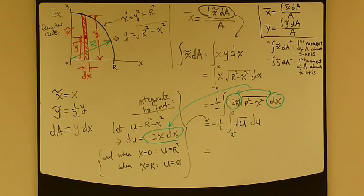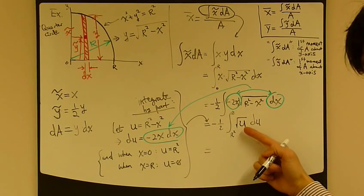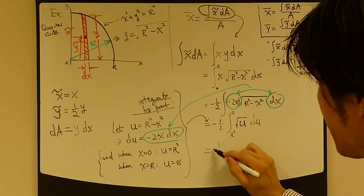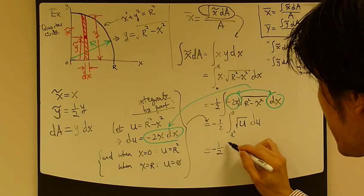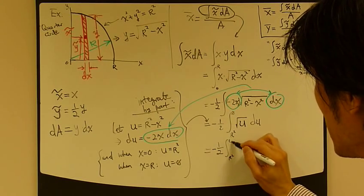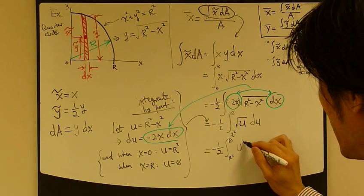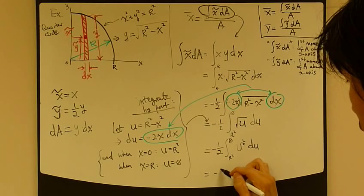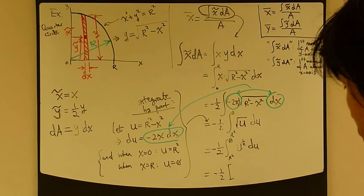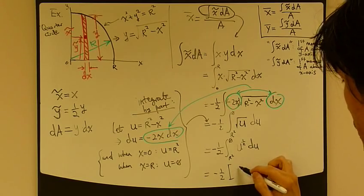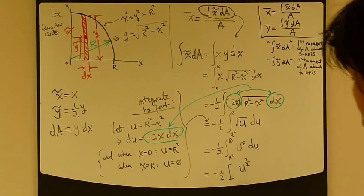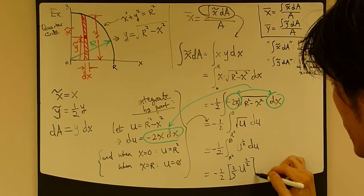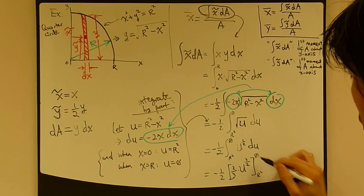So, now, square root of u is u raised to the power of 1 half. So, negative 1 half. U to the 1 half. So, do this integration. Negative 1 half. So, this plus 1 becomes 2 over 2 divided by 3 over 2, which is 2 times 2 over 3. From r square to 0.